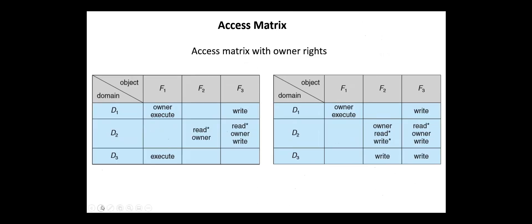The addition and removal of new rights is performed using the owner right. If access IJ includes the owner right, then a process executing in domain DI can add and remove any right in any entry in column J. For example, in this figure, domain D1 is the owner of file F1. Therefore, it can add and delete any valid rights in column F1. Here the right execute in domain D3 is removed.